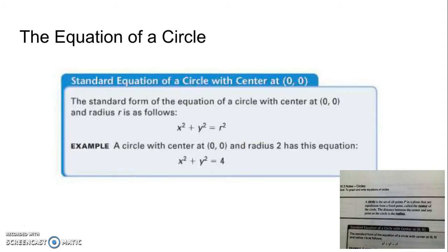Mathematically speaking, in algebra, we can describe a circle with an equation. Standard form of a circle, if it's centered at the origin, would look like this: x² + y² = r². That r² is the radius.